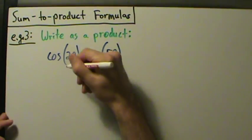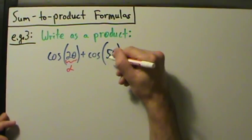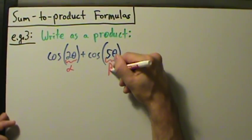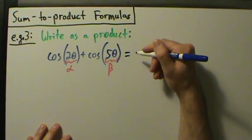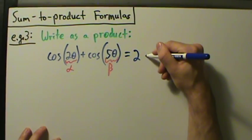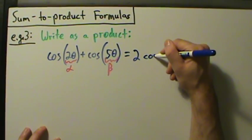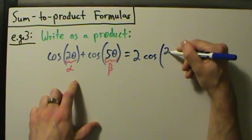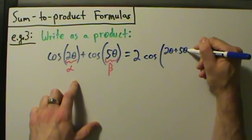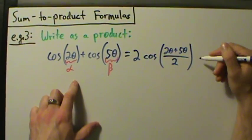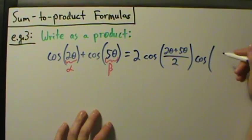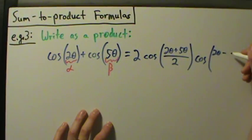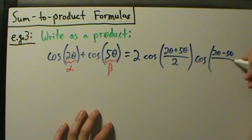Our alpha is two theta and our beta is five theta. Now we're just going to directly plug into the formula. This is going to be two times the cosine of (alpha plus beta), which is two theta plus five theta, all divided by two. Then times the cosine of (alpha minus beta) over two, so that's two theta minus five theta, all over two.